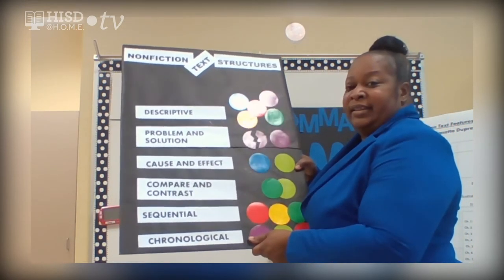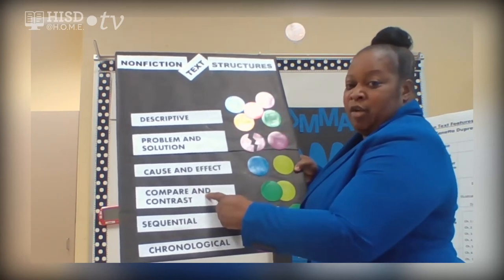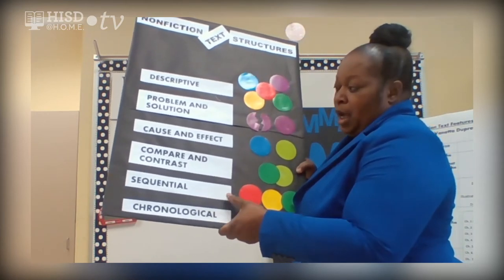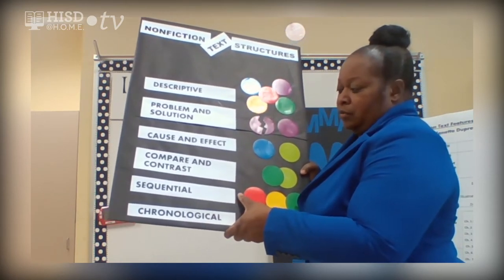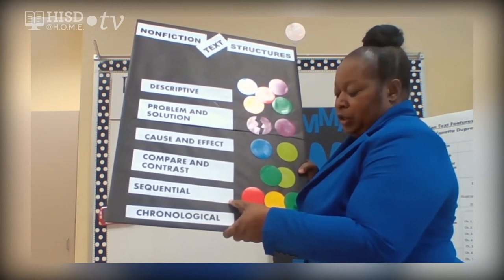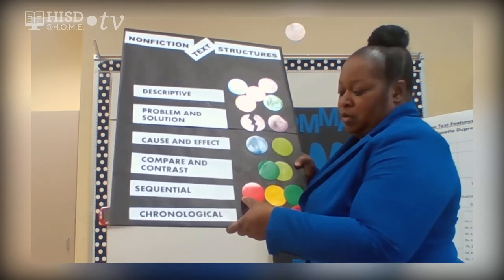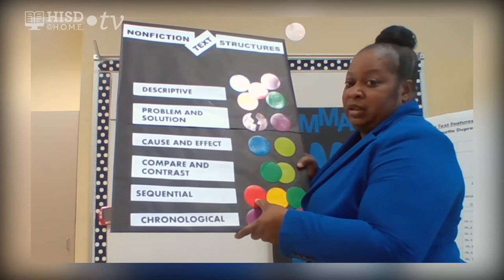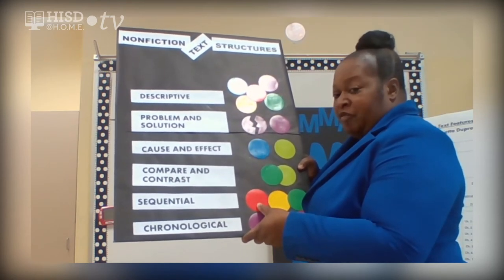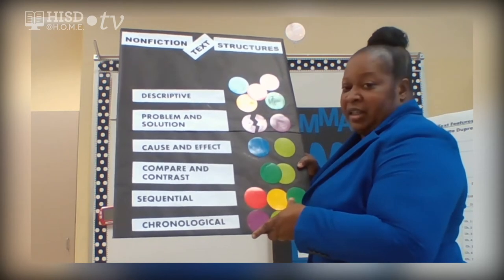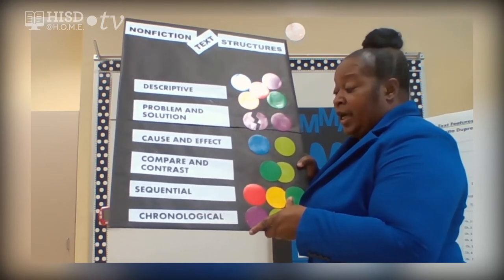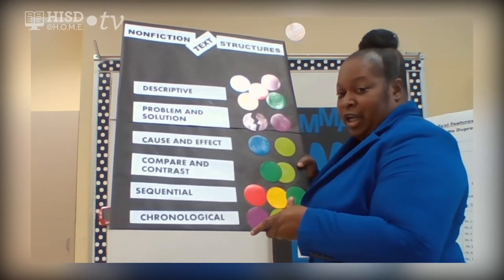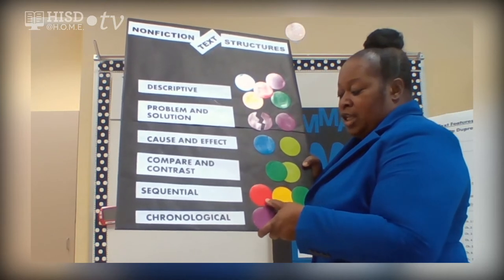Compare and contrast — how things are alike and how they are different — is the compare and contrast text structure. And sequential: sequential is when authors demonstrate steps in a process. This happened first, then this happened next, and finally this happened. When we see informational text written with a sequence of events or steps, that is sequential order.